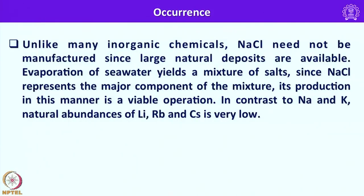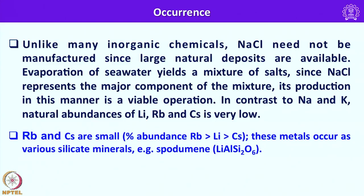Unlike many inorganic chemicals, sodium chloride need not be manufactured since large natural deposits are available. Simple evaporation of sea water yields a mixture of salts; since sodium chloride represents the major component of the mixture, its production in this manner is a viable operation. In contrast to sodium and potassium, the natural abundance of lithium, rubidium and cesium is very low, and rubidium and cesium occur in only trace quantities. These metals occur as various silicate minerals; for example, spodumene, LiAlSi2O6. From these minerals the corresponding alkali metals are extracted.